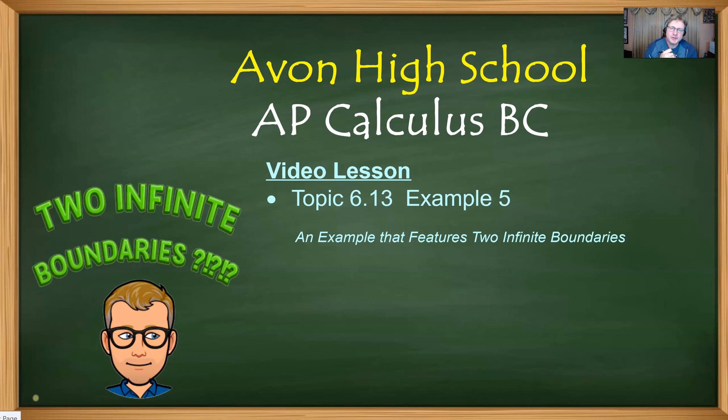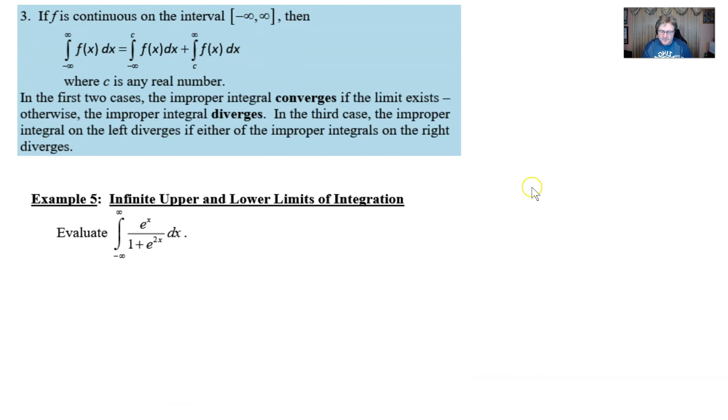Welcome back AP Calculus BC students. Mr. Record here from Avon High School with video 5 featuring example 5 from our topic 6.13. It's a pretty robust topic with 9 videos overall, but this is the final example that's going to feature boundaries of integration that contain infinity. We've been having so much fun with those, I figured why not throw in two different kinds of infinity values - a lower boundary of negative infinity and an upper boundary of positive infinity. That's going to make for one of our more challenging improper integrals. But to top it off, I'm also going to give you a more challenging integration problem to deal with. Let's take a look at example 5. We see that we're asked to integrate from negative infinity to positive infinity of e^x over 1 plus e^(2x).